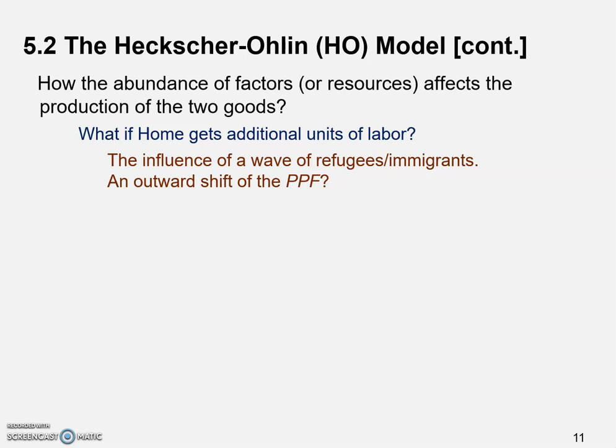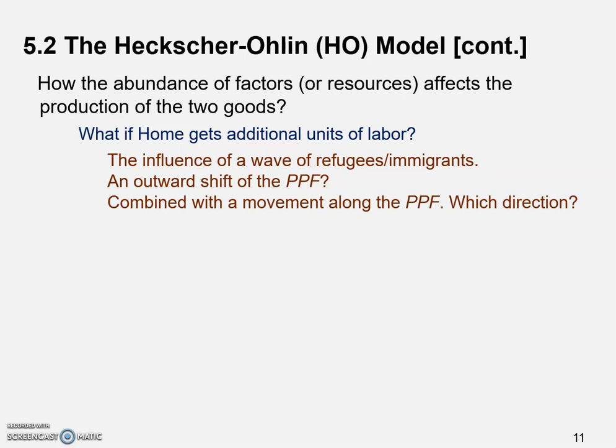There's an increase in productive capability for this economy. We also see a movement along the PPF — which direction that movement goes depends on the case. In our case, because cloth is labor-intensive, when we increase labor the movement should go towards the cloth axis.